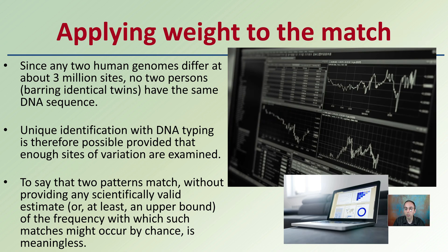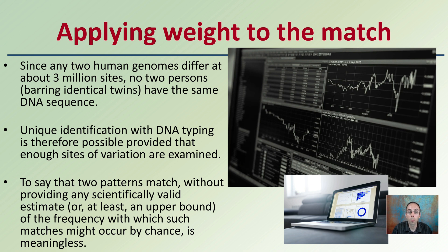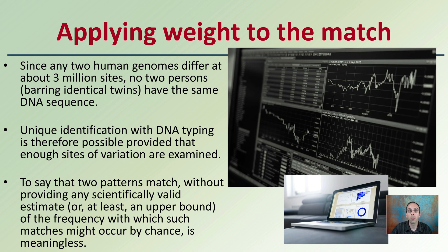Now, applying weight to the match. Since any two human genomes differ at about three million sites, no two persons — barring identical twins — have the same DNA sequence. Unique identification with DNA typing is therefore possible, provided that enough sites of variation are examined. This is where a partial profile becomes a concern — if it's too incomplete, we won't have enough sites to provide any weight to the match. Saying two patterns match without providing scientific validity or an estimate of the frequency with which such matches might occur by chance is meaningless. You need mathematical statistics to give weight to how accurate those numbers actually are.